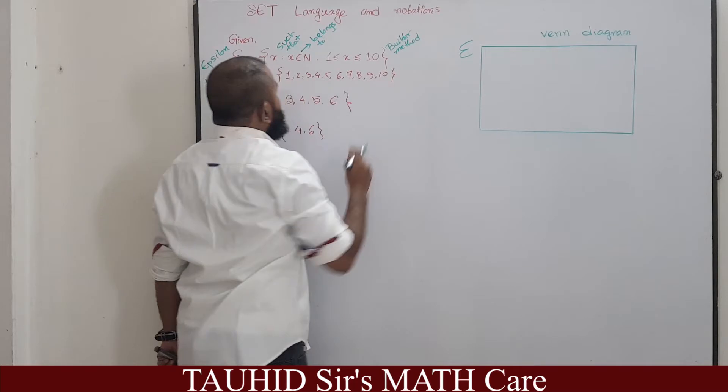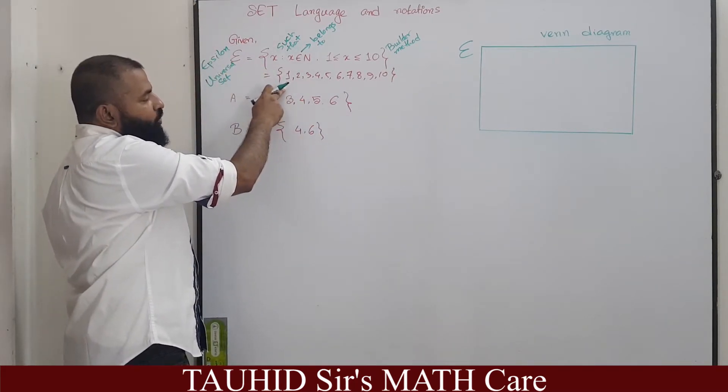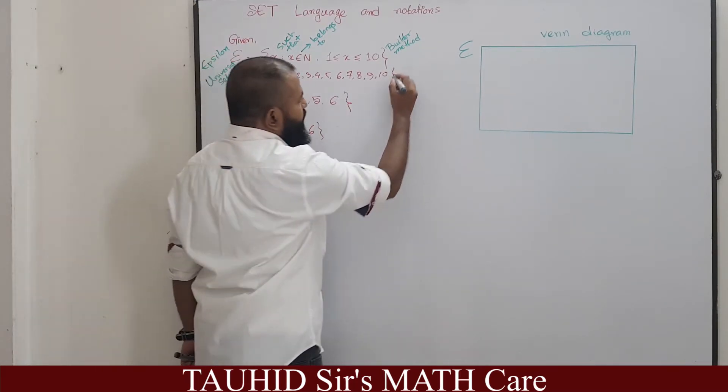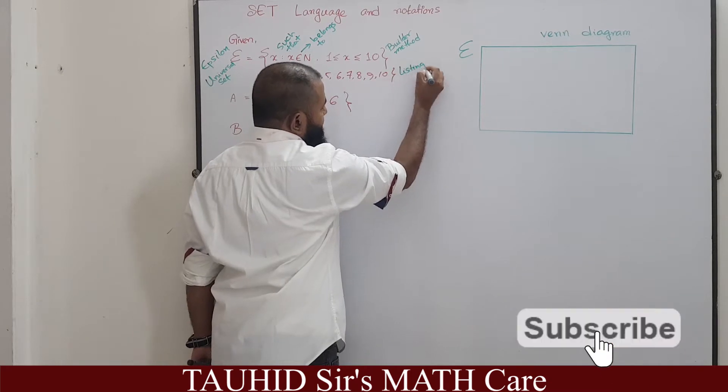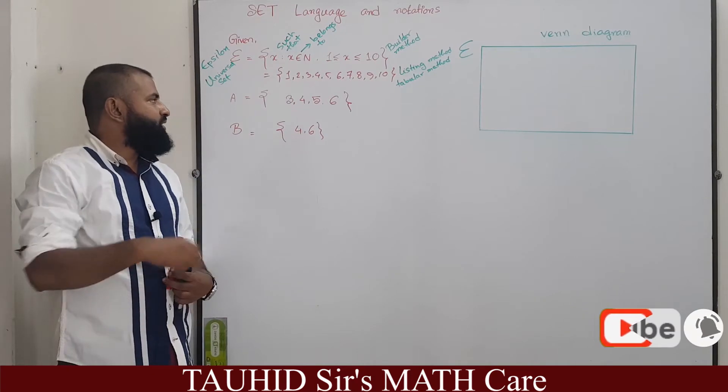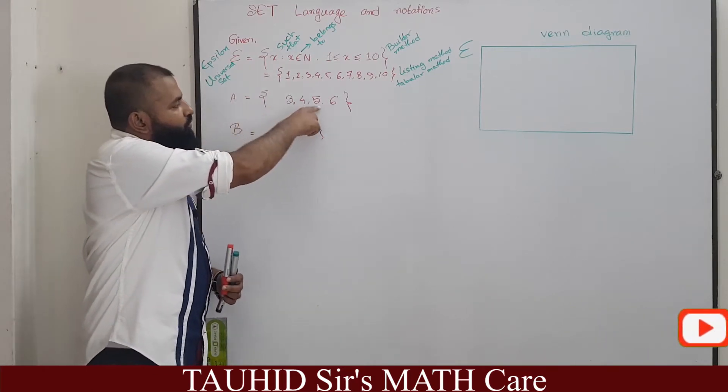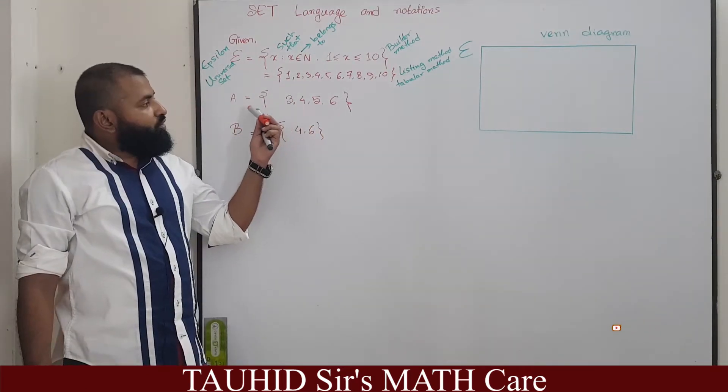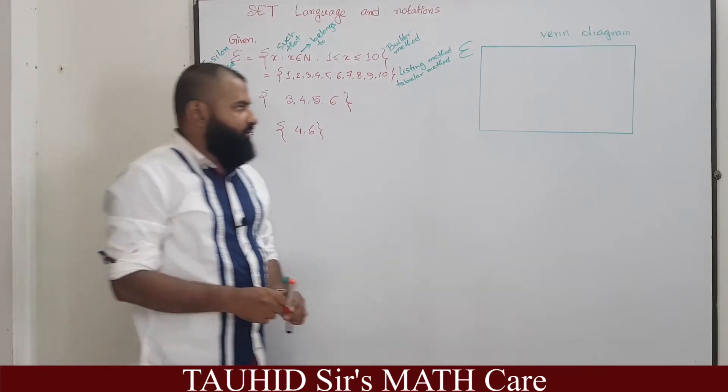Writing a set in this method is called set builder method and this method of writing a set is called listing method or tabular method. Here another set is given, A equals 3, 4, 5, 6.